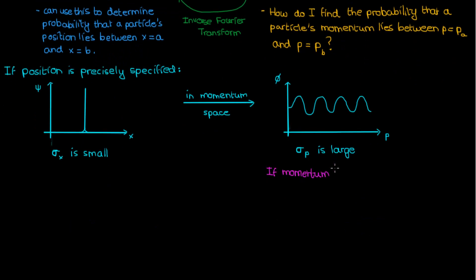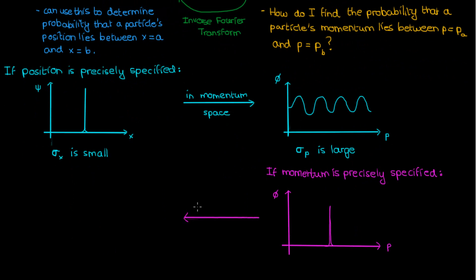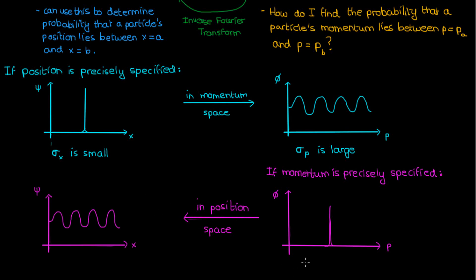On the other hand, if my momentum is precisely specified, my wave function in momentum space will look like a delta function — a spike. But when I look at the wave function in position space, it looks like a wave, because the inverse Fourier transform of a delta function is a sinusoidal wave. As a result, I won't be able to precisely specify the position, because in position space the wave function is a sinusoidal oscillation and it's impossible to pinpoint an exact value of position since the wave function is so spread out. So the uncertainty in p is small, but because of the nature of Fourier transforms, the uncertainty in x must be large.